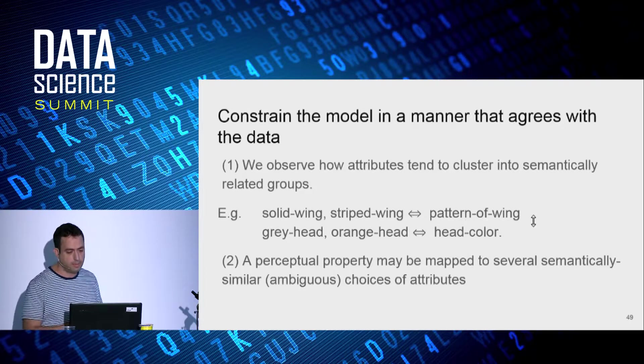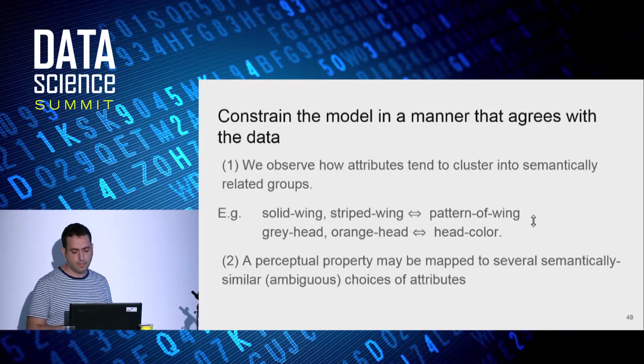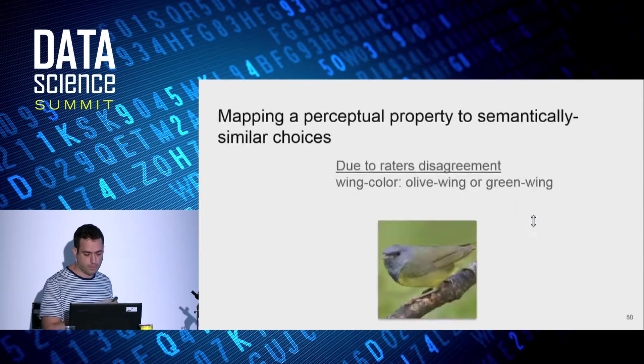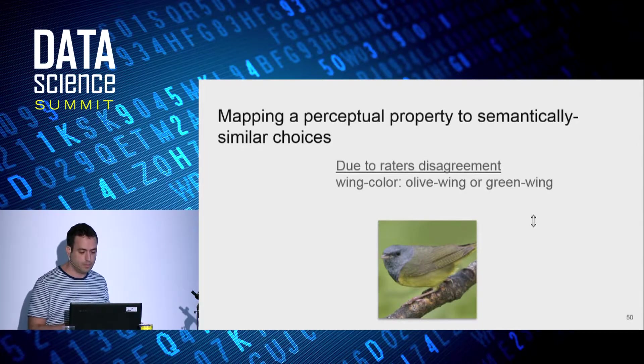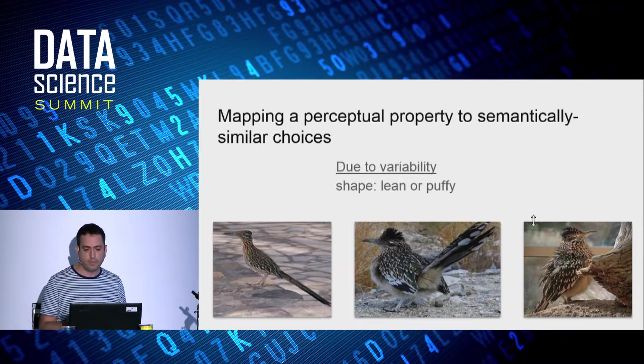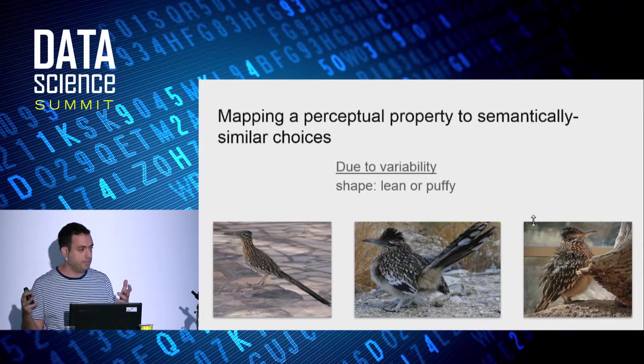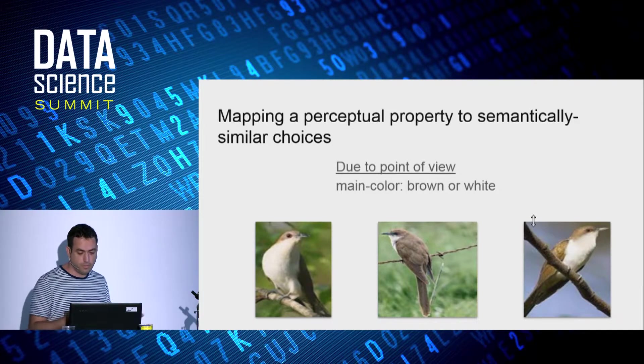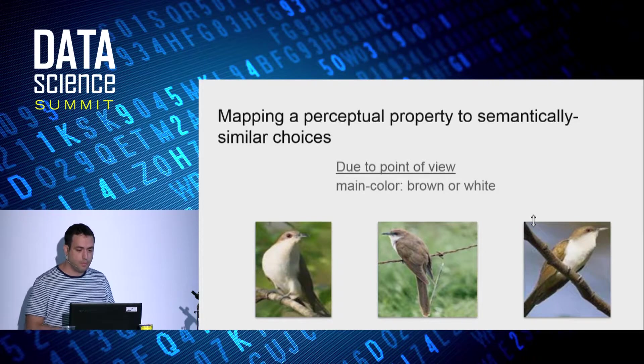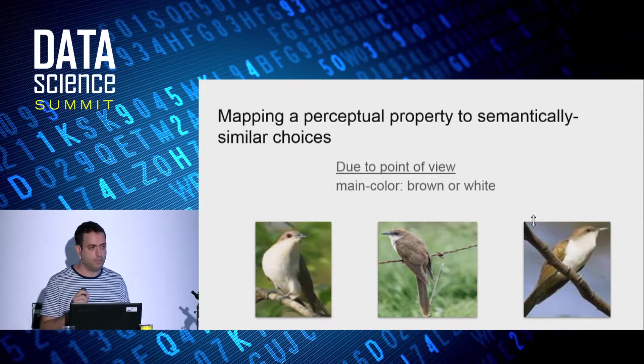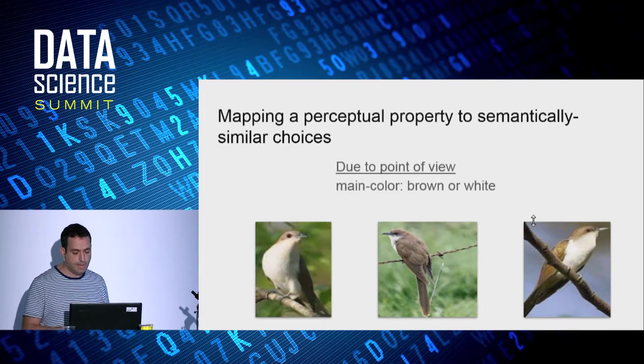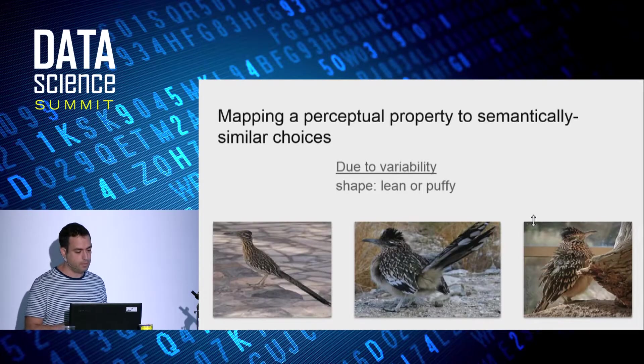A second observation we make is that the perceptual property may be mapped to several semantically similar ambiguous choices of attributes. And this may be caused by several factors. And I'm going to show you some for example. So it can be due to raters' disagreement. And here, some raters say the wings are olive, while others say the wings are green. It can also be due to within-class variability. Like here, sometimes the roadrunner looks puffy, but other times it looks slim. It can also be due to point of view, which makes the main color in this class appear as brown or white, depending on the point of view.